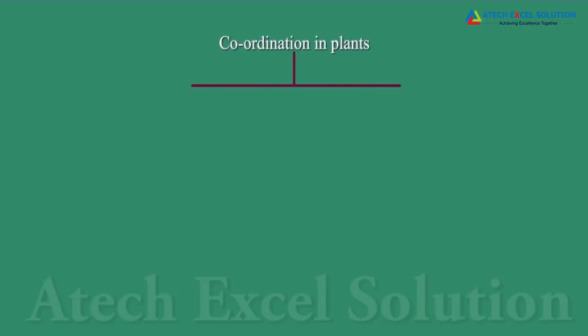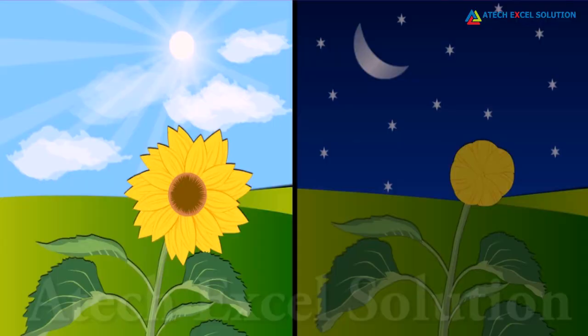The coordination in plants are of two types: dependent on growth and independent of growth. The movement of sunflowers in response to day or night and the movement of leaves of choi-mui or touch-me-not plant are examples of coordination of plants that are independent of growth.